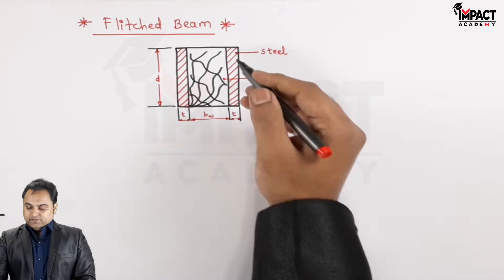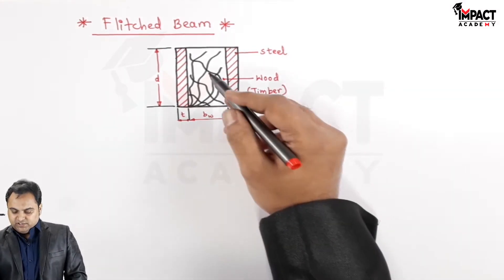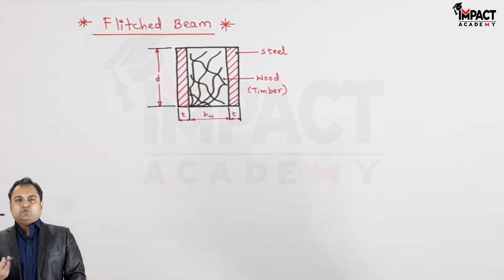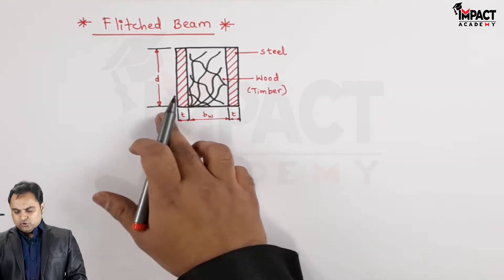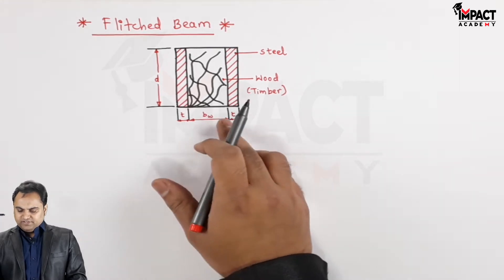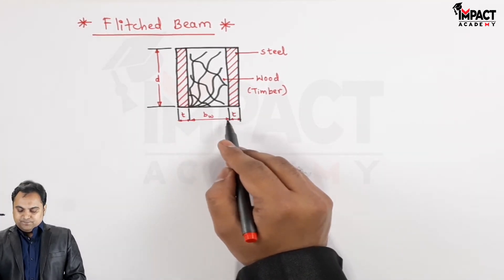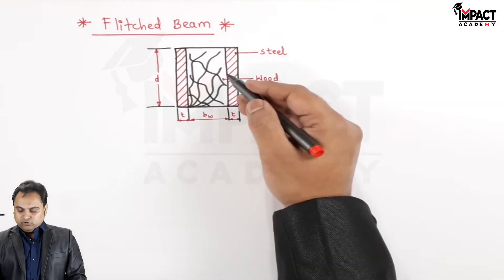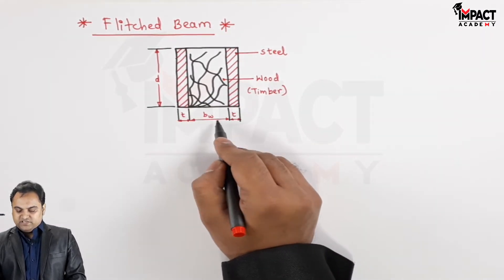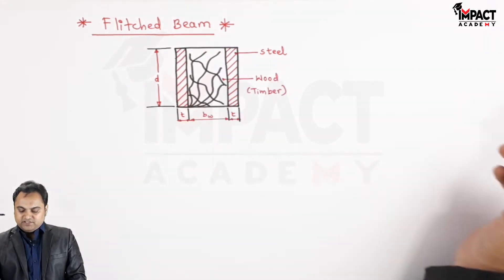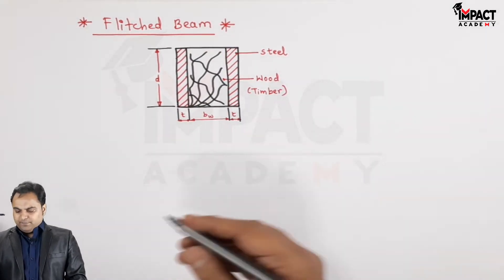So in the red sectioning which I have shown, that is steel, and in between there is wood. It means the wood has been strengthened with two steel plates on both sides, that is towards the right and left. Steel is having thickness t and depth is d. Wood is having its width as b subscript w, that is the width of wood, and the depth is same, that is small d.